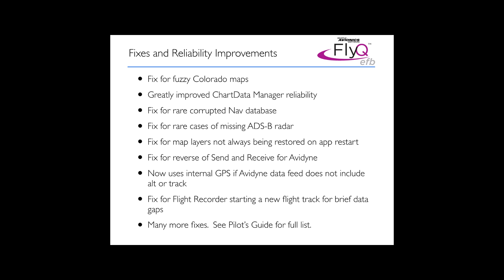We fixed a number of long-term, relatively minor issues that have been in the app for a while. Things like sometimes when you turn map layers on and off, the layers that you turned on weren't always restored properly when the app restarted. There were a number of fixes to do with Avidyne, and we improved the way the flight data recorder determines the start and stop of each flight leg — previously, if data dropped out for a moment, it could appear to be two or three flights when it was clearly one. The app now does a much better job of determining when a flight really starts and ends. There were many more fixes, so I invite you to take a look at the pilot's guide for 3.2.1 to see all the details.